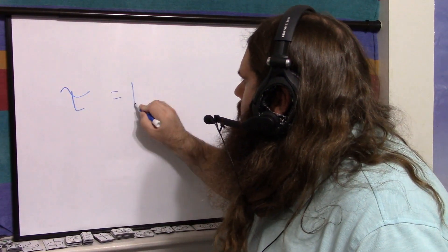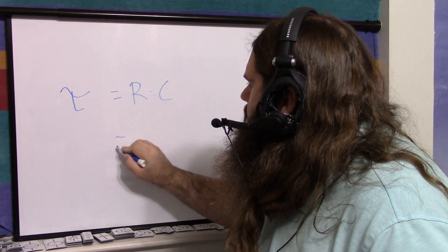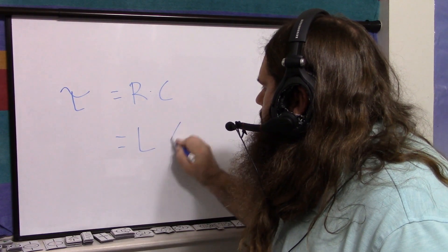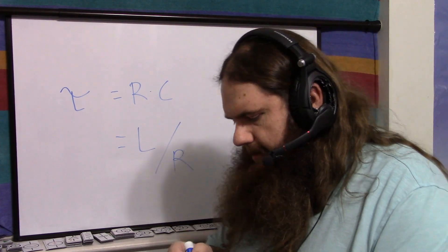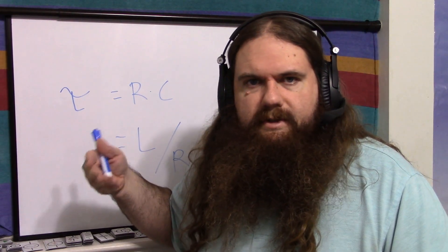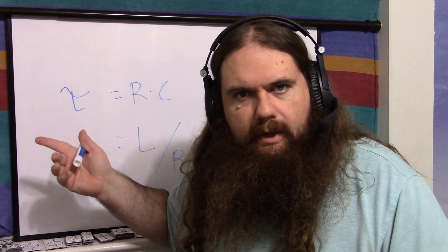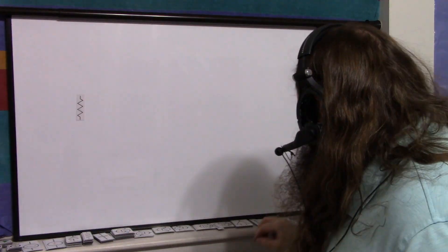Tau equals resistance times capacitance, or inductance divided by resistance, and you can use this to make filters and timers and whatnot.